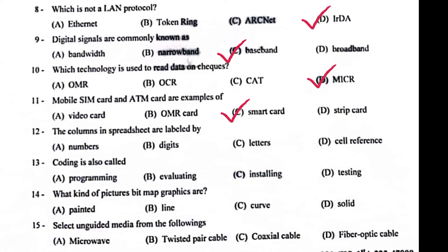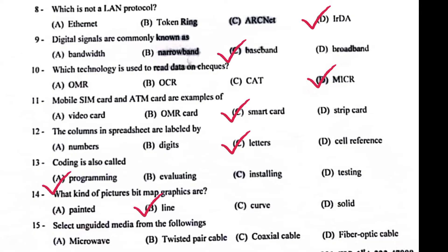Columns are labeled by letters. Coding is also called programming. Which kind of picture is bitmap graphic. Line select: unguided media from the following is microwave.